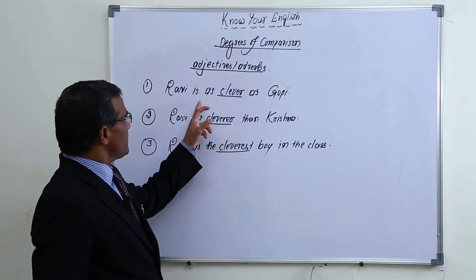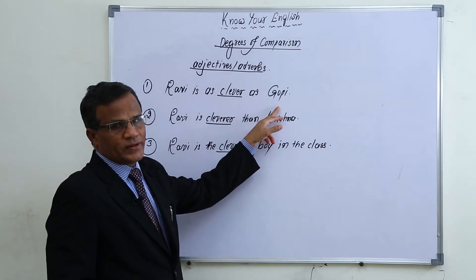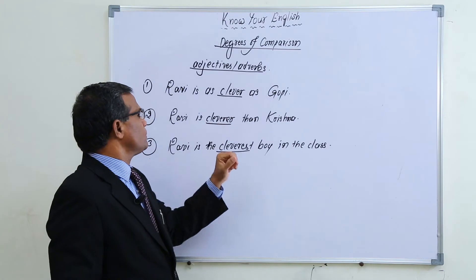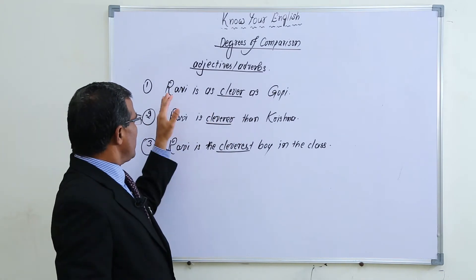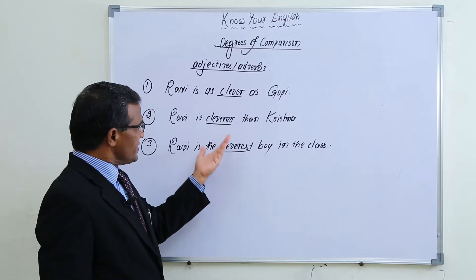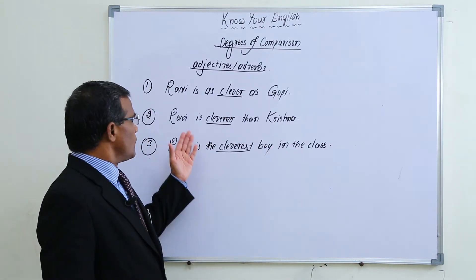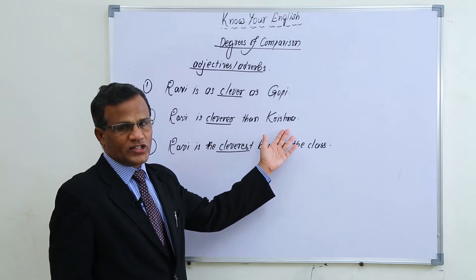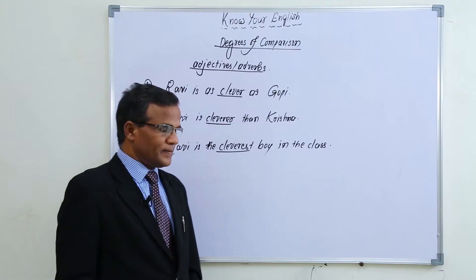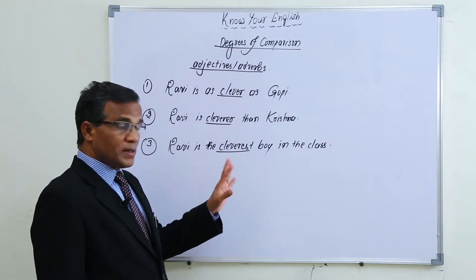In the first sentence we are comparing the cleverness of Ravi with the cleverness of Gopi. Cleverness is a quality of a person, and we use adjectives or adverbs. When we compare Ravi's cleverness with Gopi's, we say: 'Ravi is as clever as Gopi.' Comparison may also be different ways: 'Ravi is cleverer than Krishna.' Or, 'Ravi is the cleverest boy in the class,' where the cleverness is at its highest — the superlative.